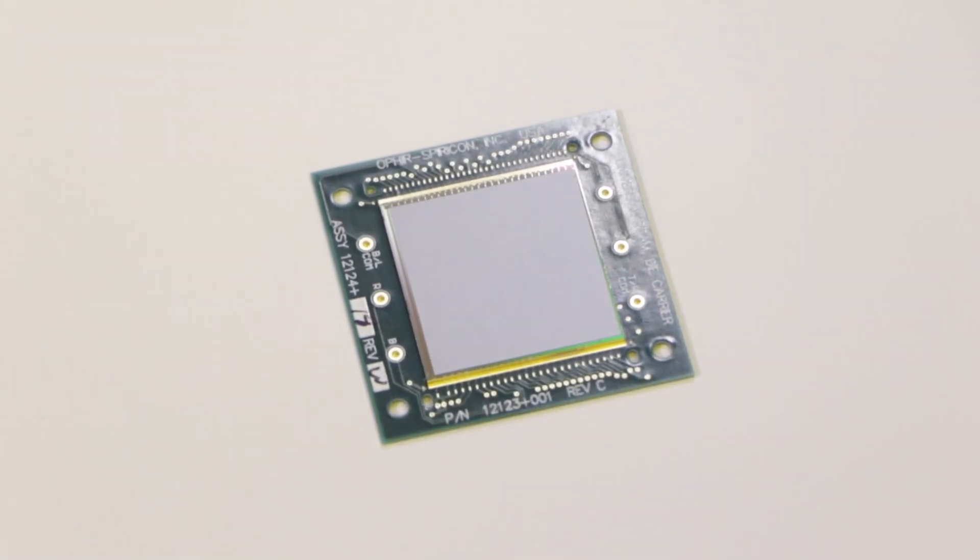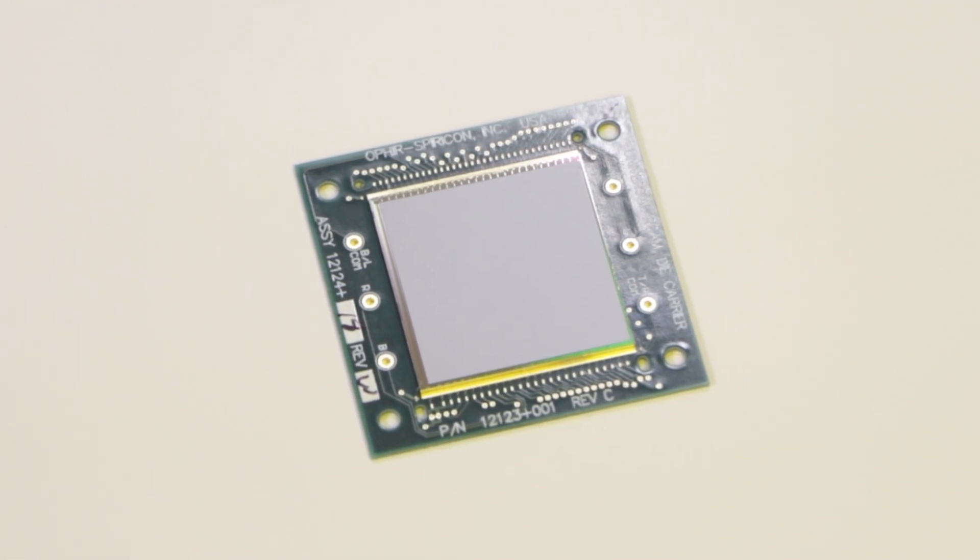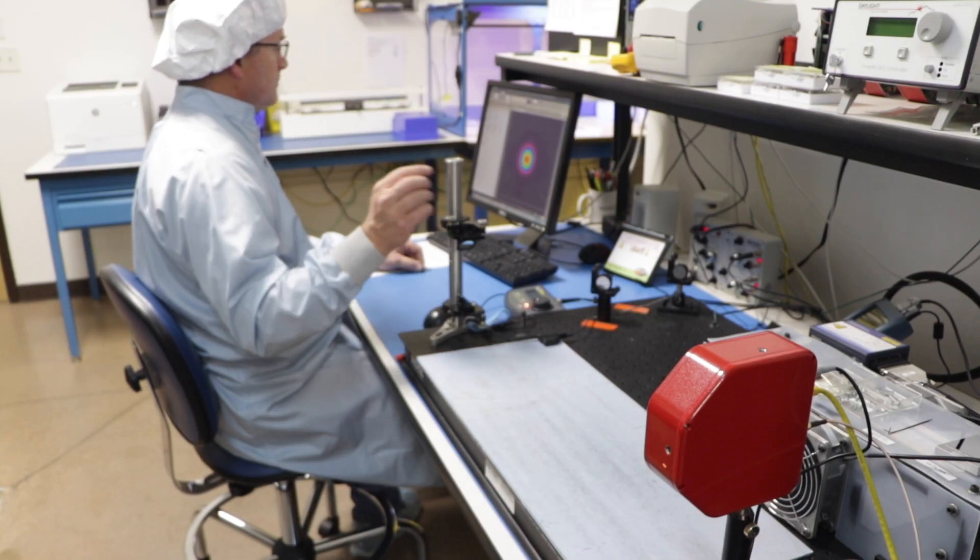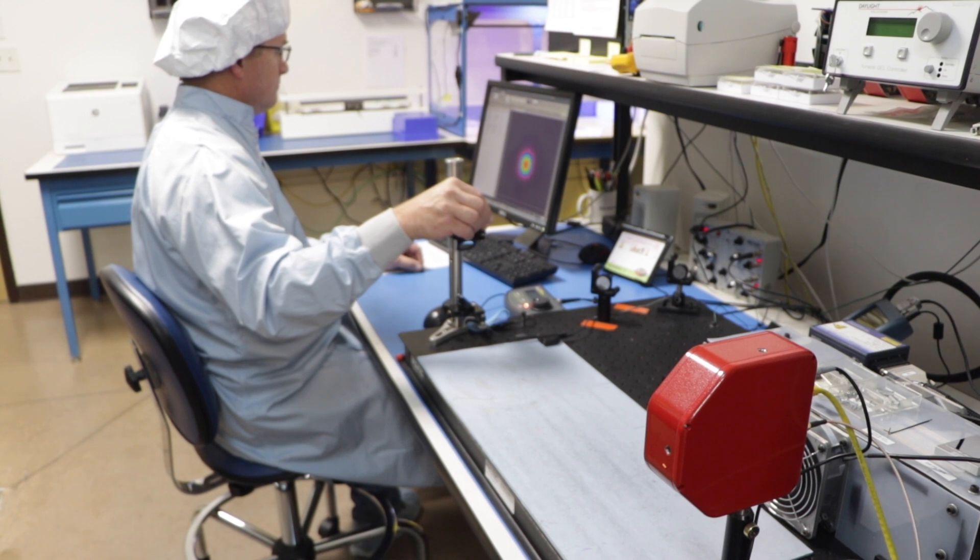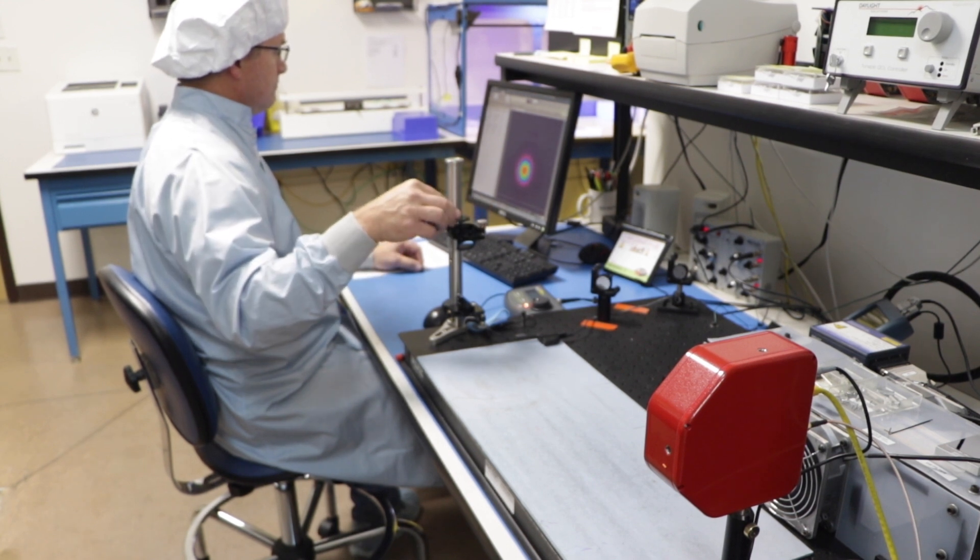Light impinging on the pyroelectric crystal is absorbed and converted to heat, which creates a charge on the surface. The multiplexer then reads out this charge.